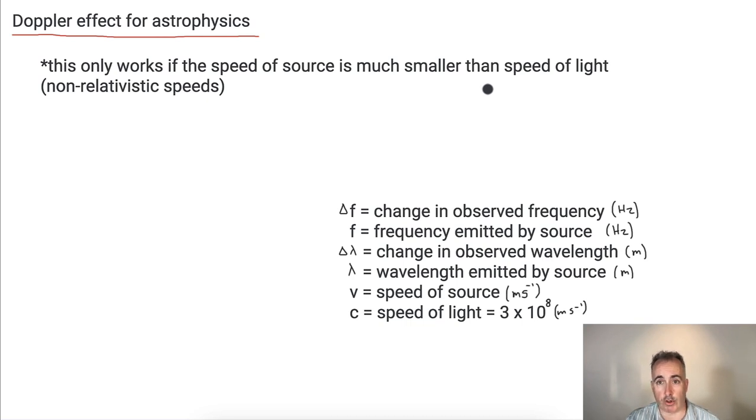That's because if you go close to the speed of light, then you have to account for it because you start having to use relativity and all things get more complicated. So we're going to assume your stars and galaxies or whatever you're looking at are not going super fast compared to the speed of light.